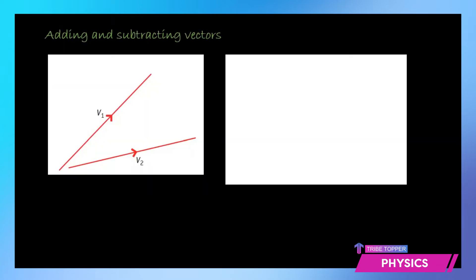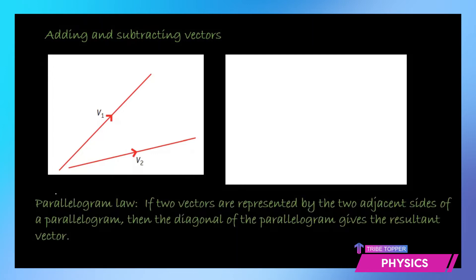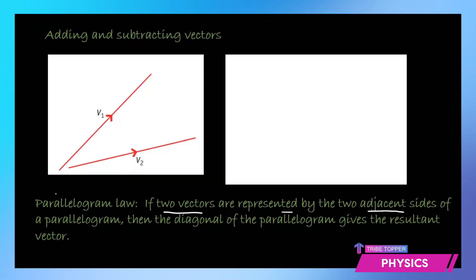Let's see how we can add two vectors. We have vector V1 and vector V2 — suppose these are two velocities we need to add. You can see they are not in the same direction. There is one rule called the parallelogram law of vectors, which states that if two vectors are represented by the two adjacent sides of a parallelogram, then the diagonal of the parallelogram gives the resultant.